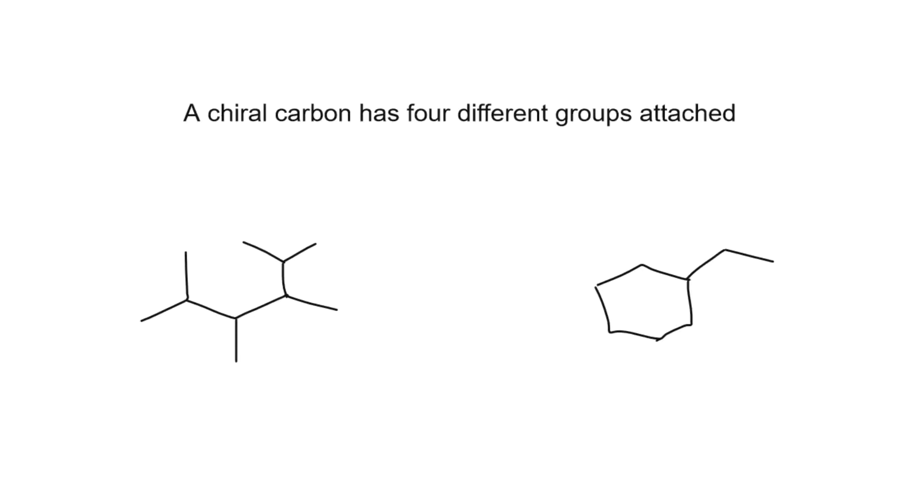First, let's briefly review what a chiral carbon is. It's one that has four different groups attached. Not different atoms, different groups.